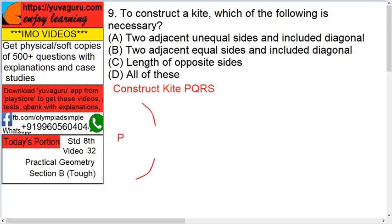Now, option B. Two adjacent equal sides and included diagonals. See here. This is point P. Equal sides, I know. Suppose 5, 5. Both are 5, 5. So, I'll put a compass point over here and draw an arc of 5 and draw an arc of 5.